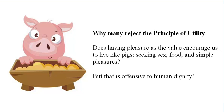After affirming the principle of utility, Mill goes on to discuss an objection to that principle and to utilitarianism generally that had by this time become quite a common objection. The objection is: isn't utilitarianism, with its focus on the doctrine of pleasure, a theory that is disgraceful to human dignity? Would not pursuing pleasure and the avoidance of pain encourage all of us to live like animals — to live like pigs, getting all the food, sex, and simple pleasure we can attain? And if that is the life that utilitarianism would promote, then utilitarianism itself is a bad ethical theory and is offensive to human dignity.